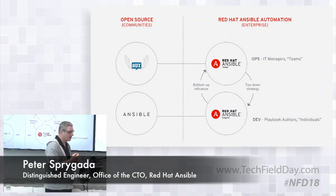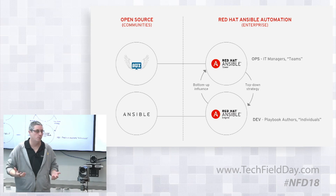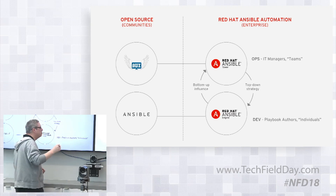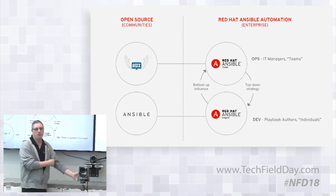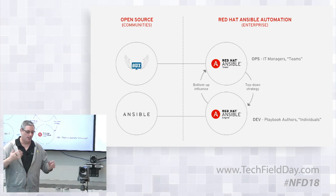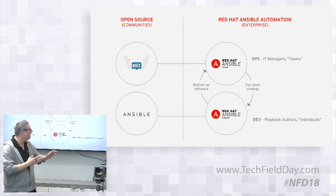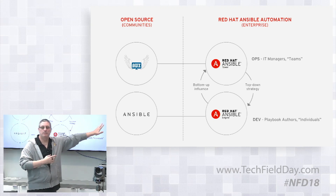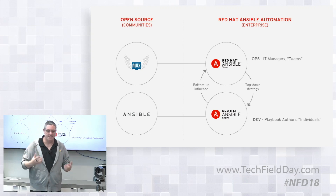What does Ansible actually look like from a product offering standpoint? Red Hat has an upstream-first mentality — everything's about open source. Ansible has two open source projects that really formulate what it is. At the bottom, we've got Ansible — you'll hear me call it Ansible, Ansible Core, or Ansible Community. Those are predominantly the three names I use. You go to GitHub, that's the code. If you want to contribute, that's the code. That's Ansible.